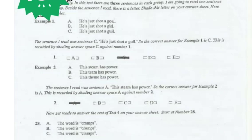Example 1. Is that short a girl? The sentence I read was sentence C. Is just short a girl. So the correct answer for example 1 is C. This is recorded by shading answer space C against number 1.